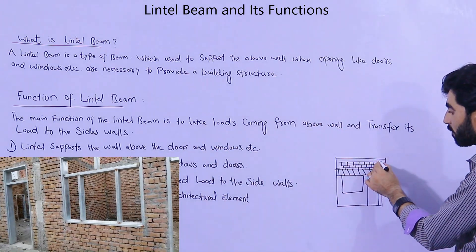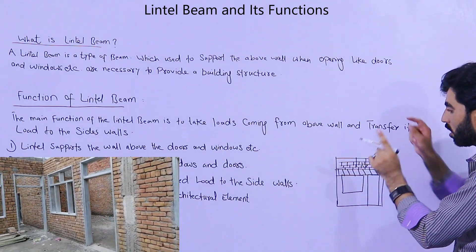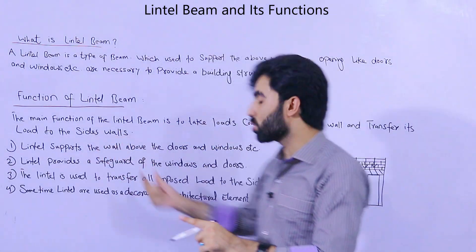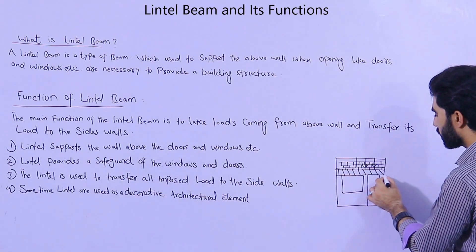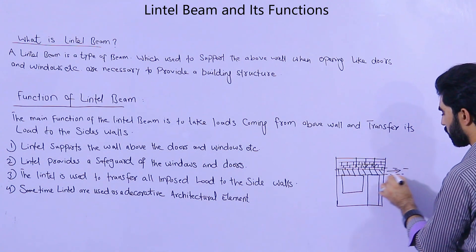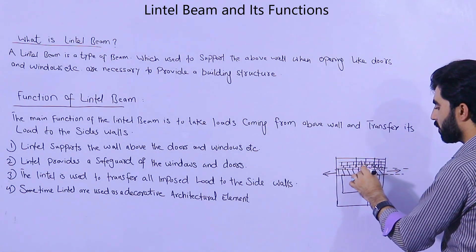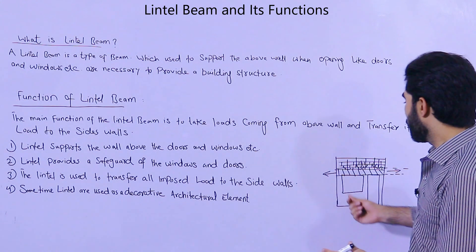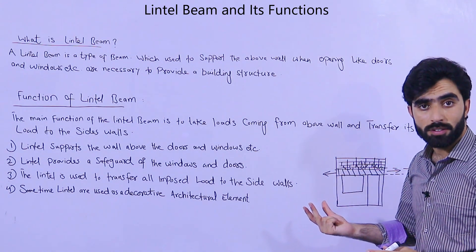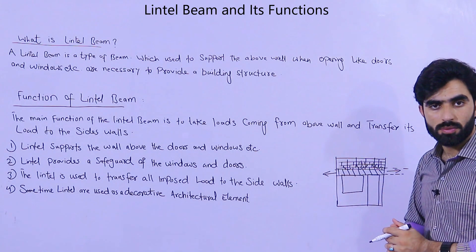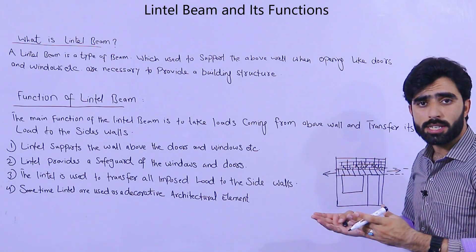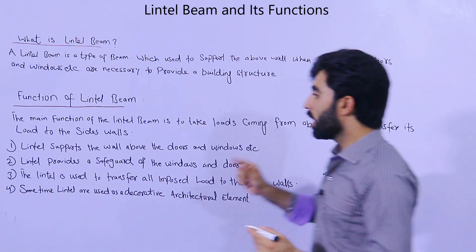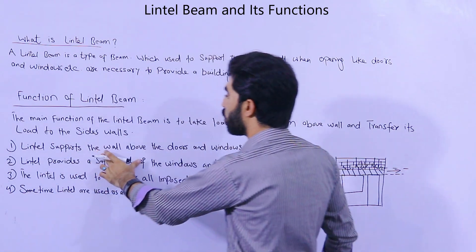The main function of the lintel beam is to take the load coming from the above wall and transfer it to the side walls. When the load comes on top of the lintel beam, it is transferred to the side walls on each side. If you don't provide a lintel beam, cracks will appear on the top of doors and windows because the door and window frames cannot support the load of the wall above.